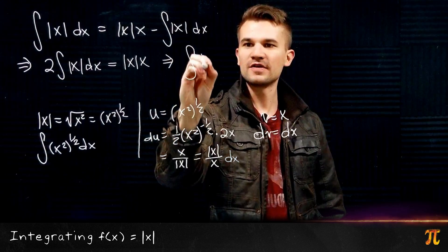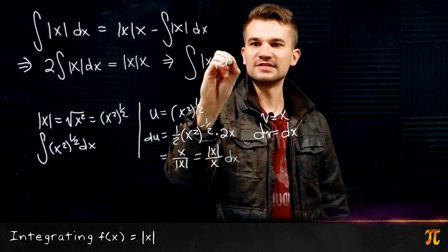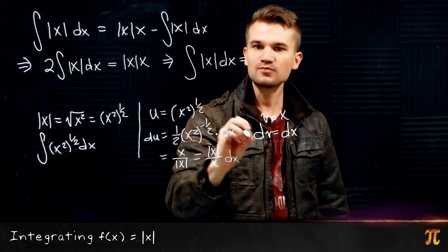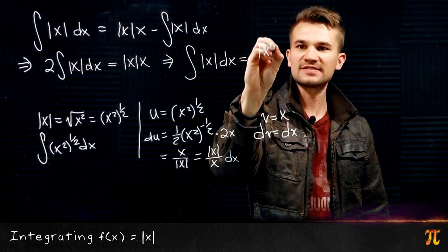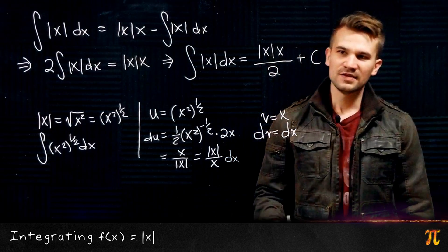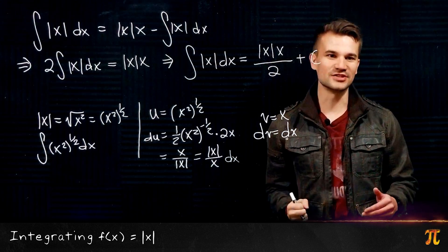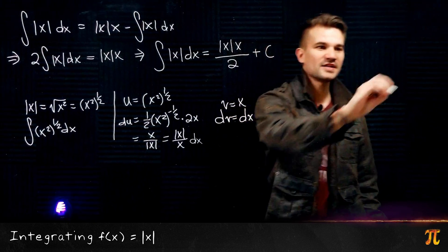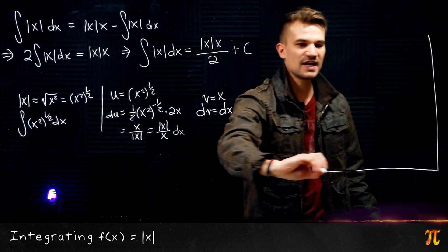the integral of |x| dx equals (|x| times x)/2 plus C. Now this is actually pretty intuitive. What does this function look like? Well, it turns out that